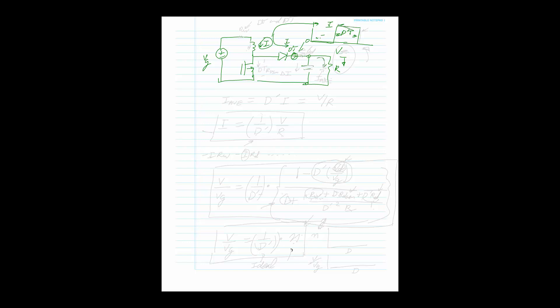The current into the load must be the average current, because any pulsating ripple would cause the output voltage to jump up and down. The capacitor handles the ripple ΔI, while the load receives I_average. The average of the diode current waveform is just D'·I.